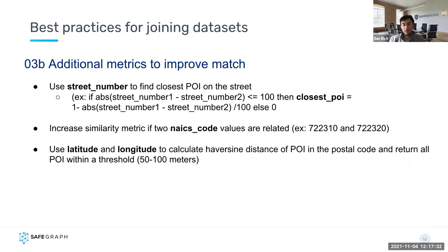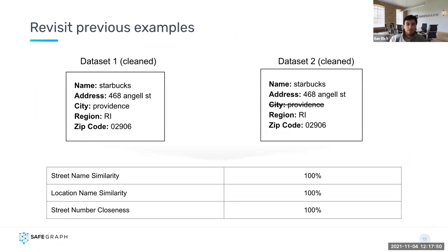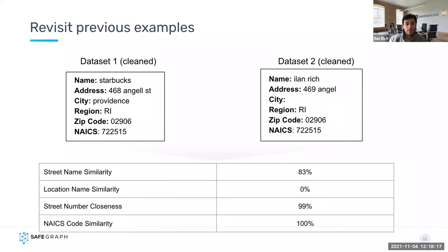If latitude and longitude are included, you can calculate the Haversine distance between pairs of points and join all POI within 50 to 100 meters of the POI you're trying to match, then calculate all similarity metrics from there. Looking at examples in action: two clean records after cleaning have 100% street name similarity, 100% location name similarity, and 100% street number closeness. For messier data, even when the location name doesn't match at all and the address is slightly different, we may choose a match because the POI are very close, the NAICS code confirms both are snack and beverage bars, and the street name similarity is 83%.